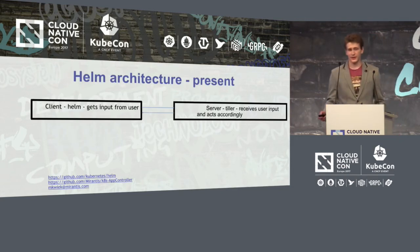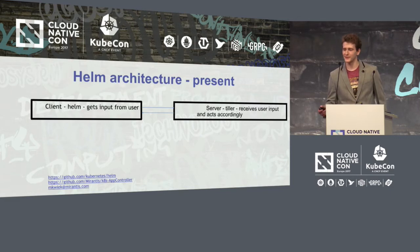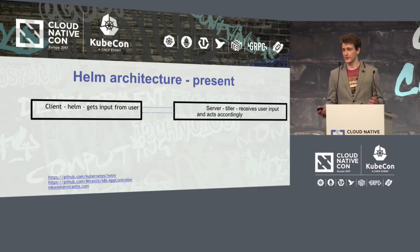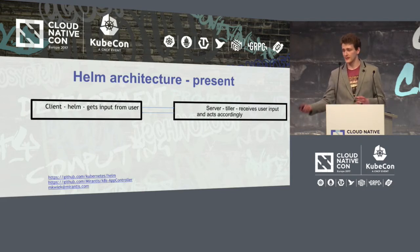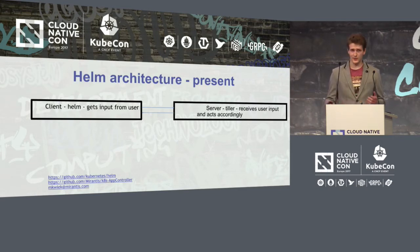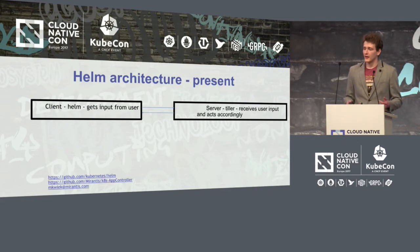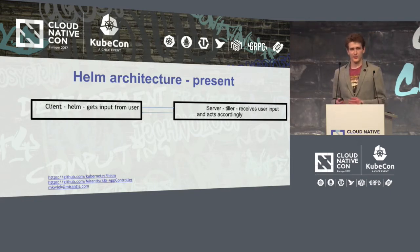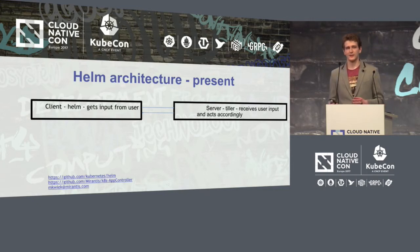The current Helm architecture looks like this picture. There's a client which gets input from the user and sends requests to the server, which is called Tiller. Tiller receives user input and acts accordingly — it can create, delete, rollback, and update your Kubernetes objects. It also stores data about your installed releases.